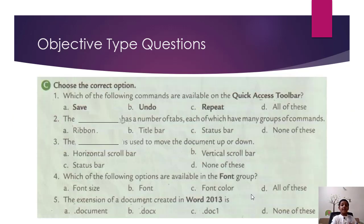C. Choose the correct option. First, which of the following commands are available on the quick access toolbar? A. Save, B. Undo, C. Repeat, D. All of these. So the answer is all of these.